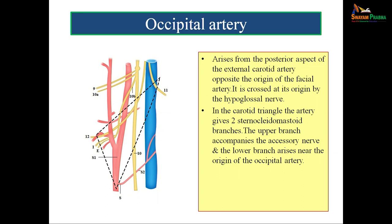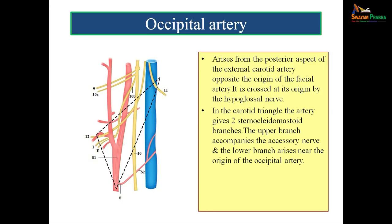The occipital artery arises posteriorly opposite the facial artery and is crossed at its origin by the hypoglossal nerve. In the carotid triangle, it gives two sternocleidomastoid branches: the upper branch accompanies the accessory nerve, and the lower branch arises near the origin of the occipital artery.